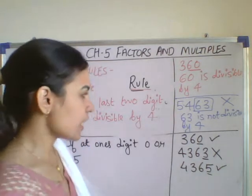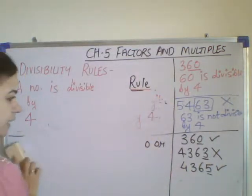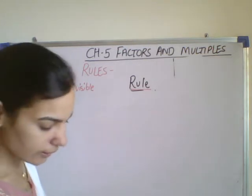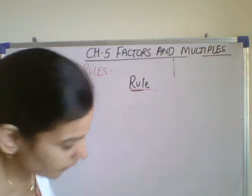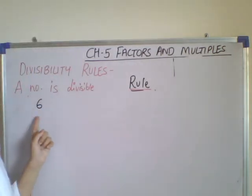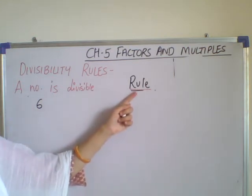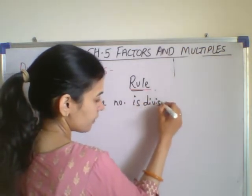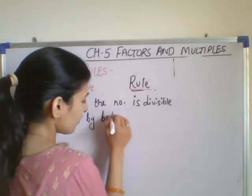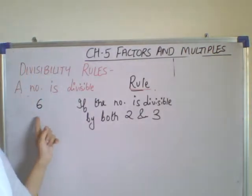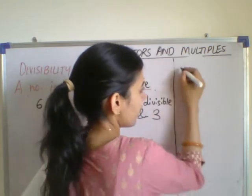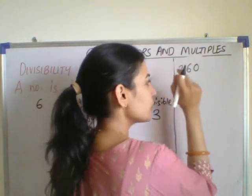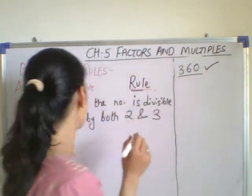The next is divisibility by 6. The rule is: if the number is divisible by both 2 and 3, then the number will be divisible by 6. Let us take the example 360. This number is divisible by 2 and also divisible by 3, so 360 is divisible by 6 as well.